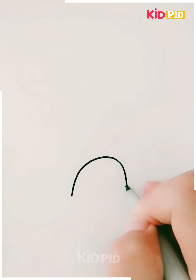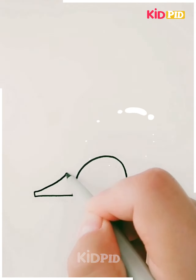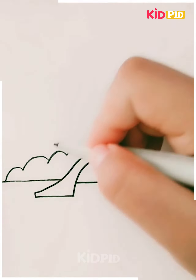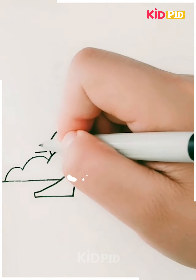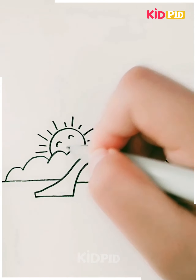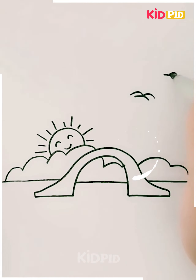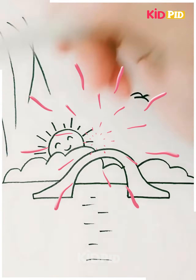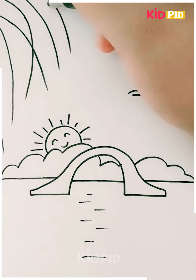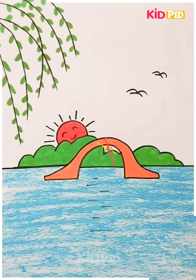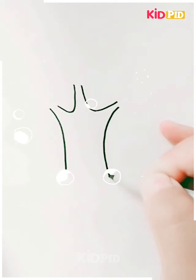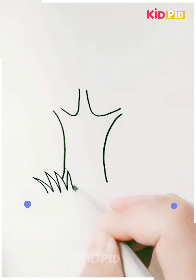I'm drawing clouds and then a sun with a smiling face between the clouds. I'm drawing crows, and branches of leaves. Let me put some shades with green color, blue color and water.